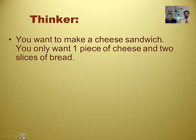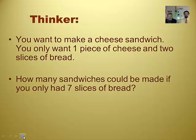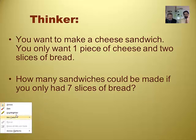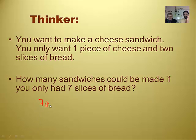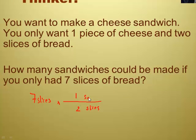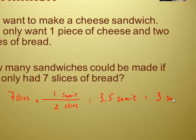It's early in the morning. You want to make a cheese sandwich. You only want one piece of cheese and two slices of bread. How many sandwiches could be made if you had only seven slices of bread? Well, two slices of bread per sandwich. So I'd be able to make three sandwiches with the cheese left over. Seven slices, and you have two slices per one sami. Oh my goodness, you are doing dimensional analysis to figure out how many sandwiches we can make. So we can get three and a half samis.